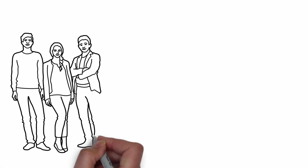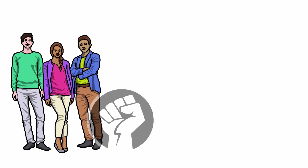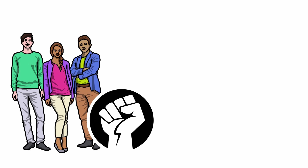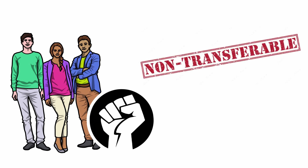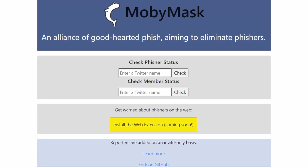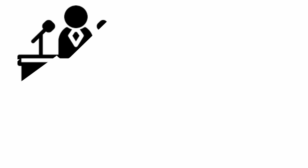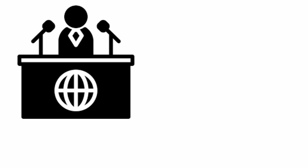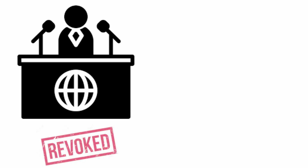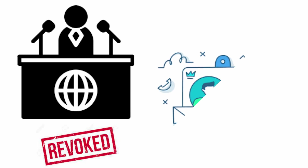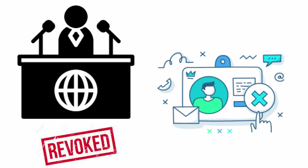The delegatable library lets us sign off-chain messages that grant powers to other people. These powers are non-transferable. This is the current landing page of MobiMask. Here is how MobiMask will look in the future after future updates and continuous improvements. All reporters can invite additional reporters, and all invitations can be revoked, which will cancel all memberships that the recipient previously invited.